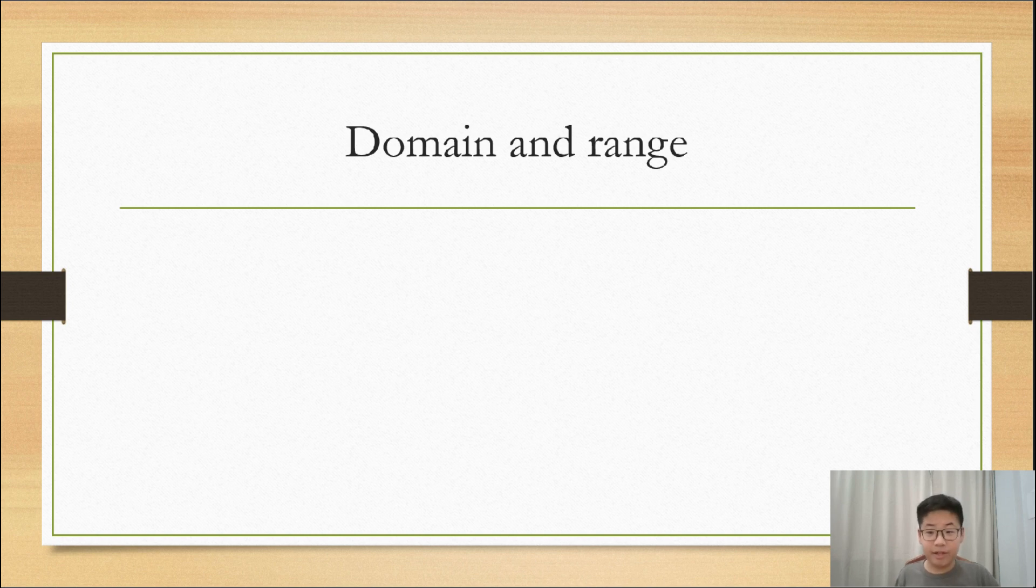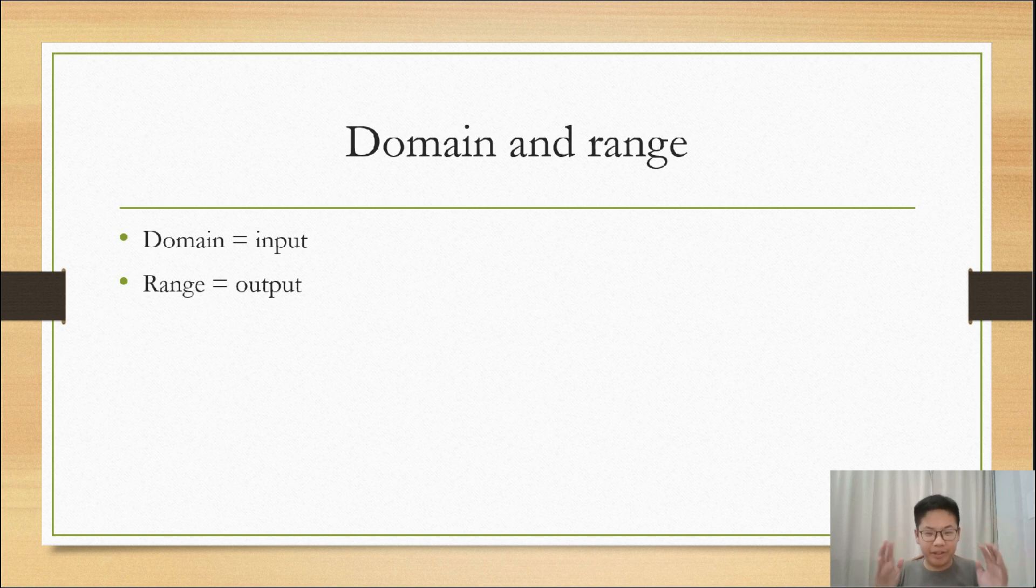What are the domain and range? A domain is like the input, and a range is like the output on the function. Think of a machine, we are going to see it later, which puts the domain in this way and outputs the range.